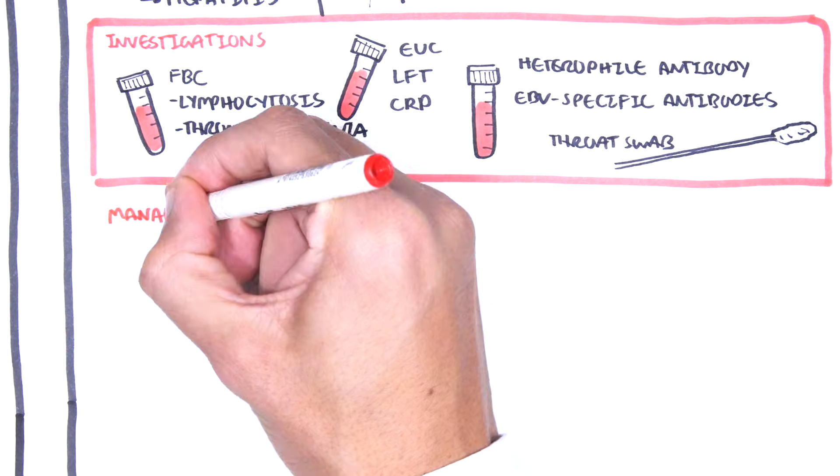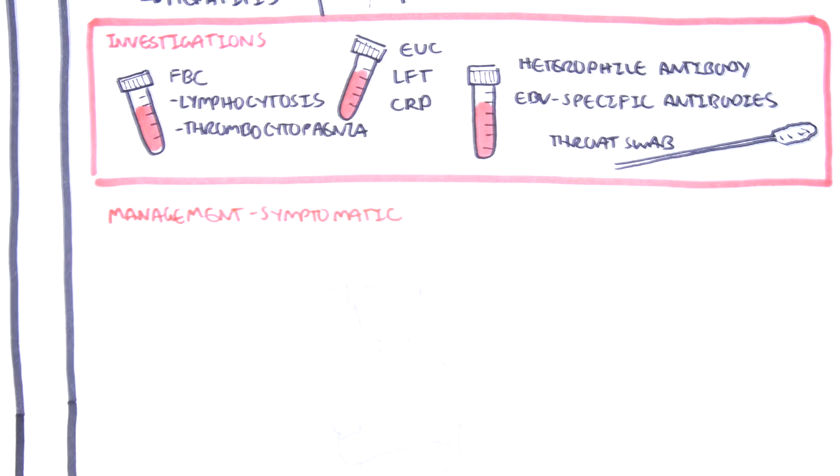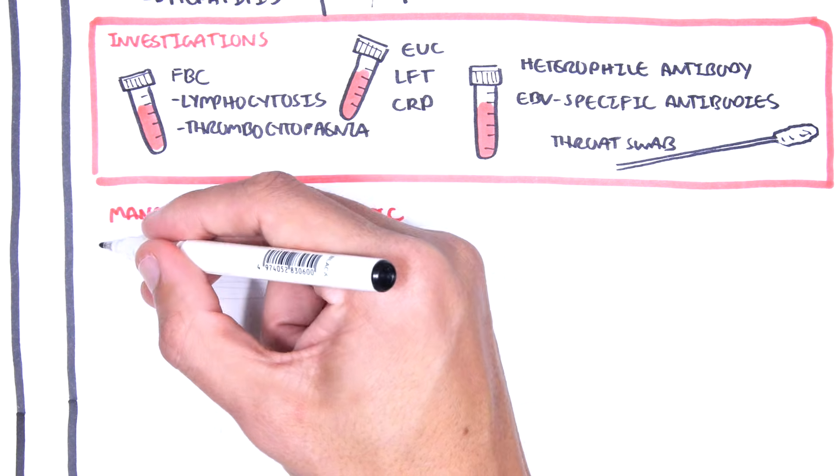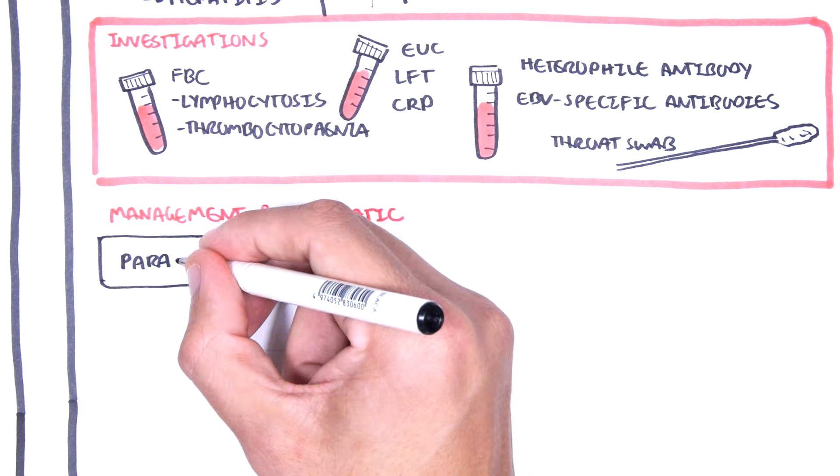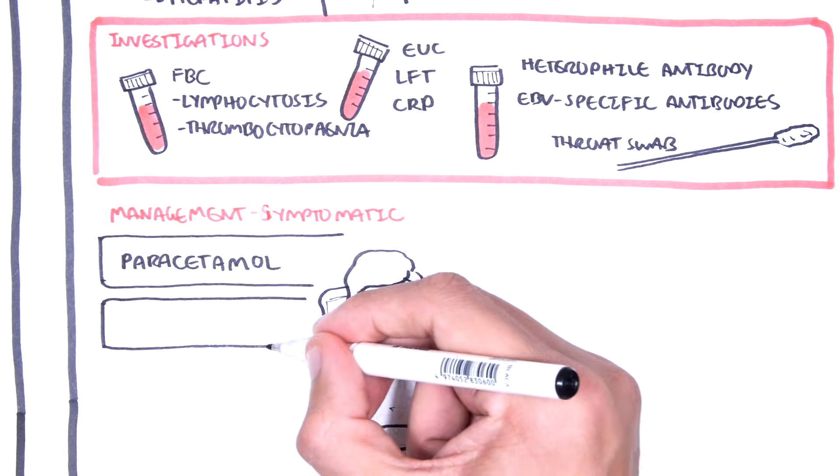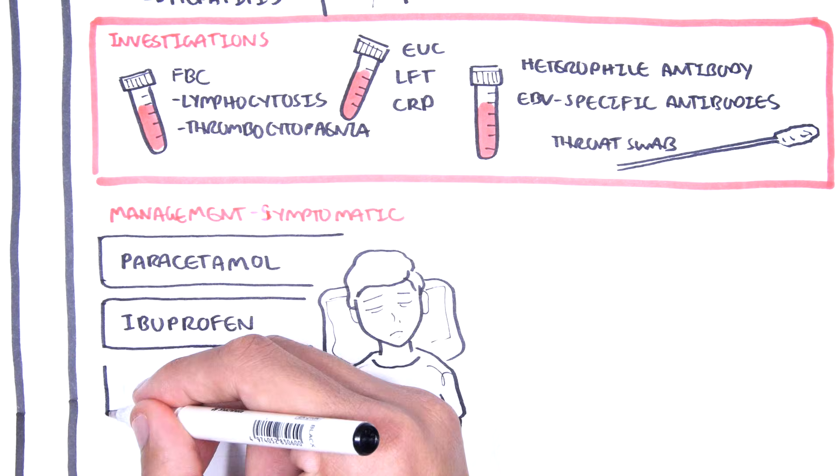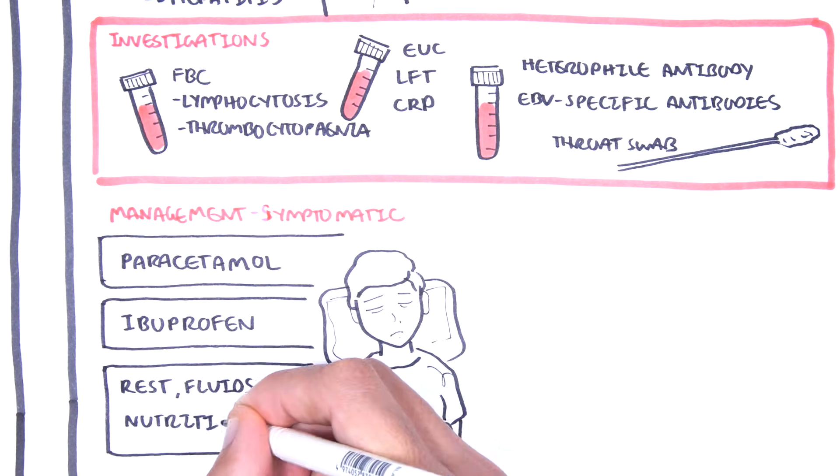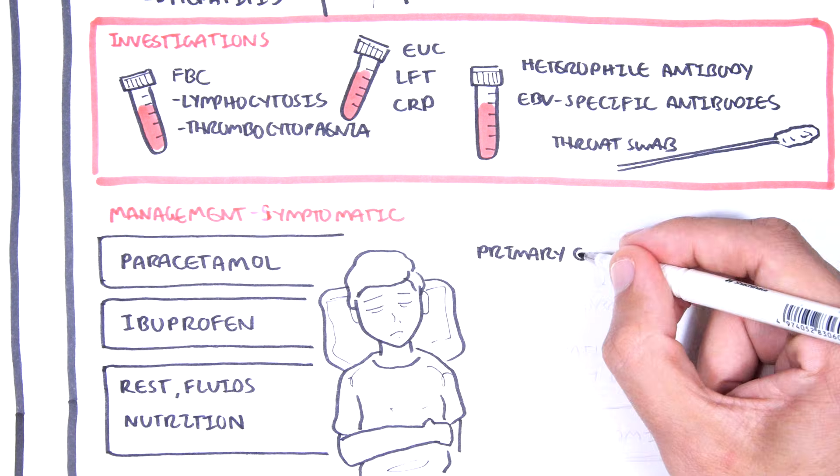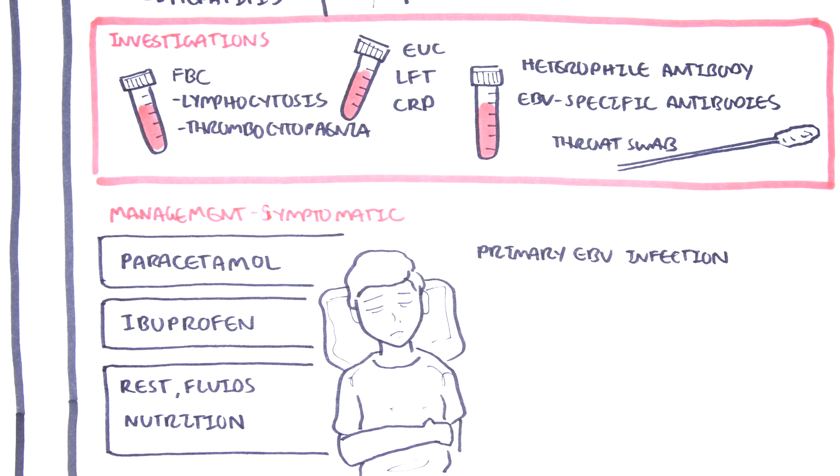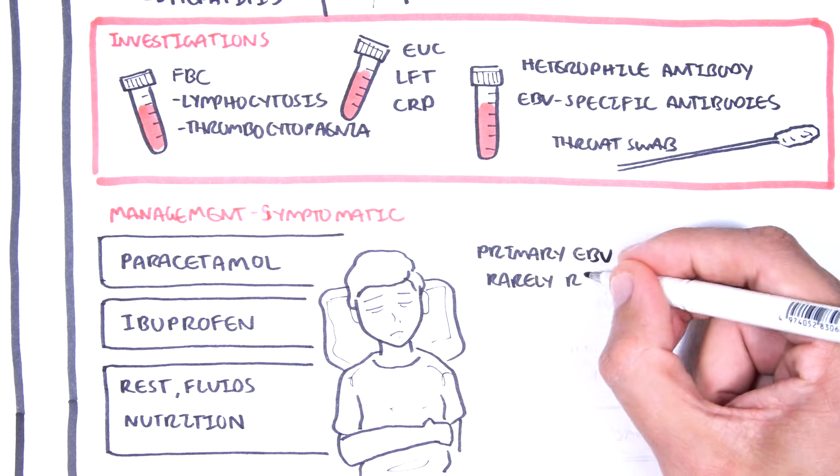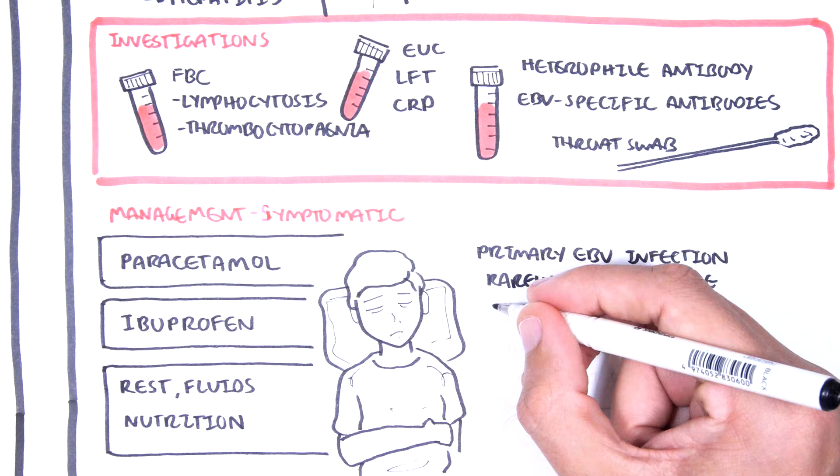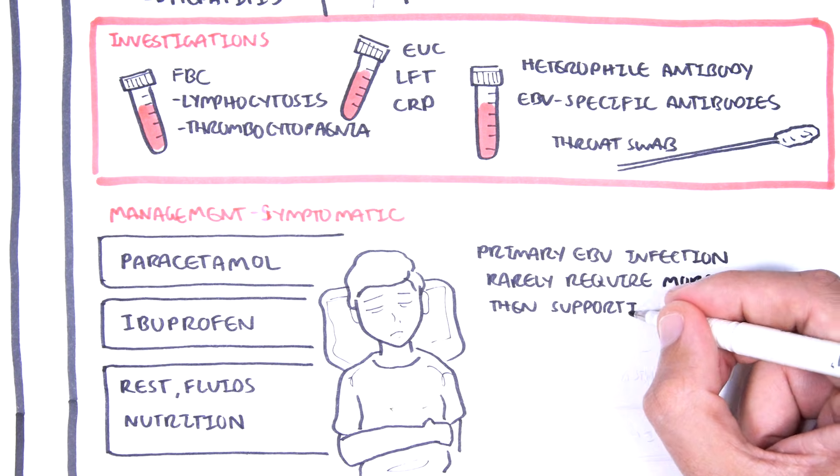Treatment for symptomatic Epstein-Barr virus infection, which is infectious mononucleosis, is usually conservative and includes pain and temperature relief using ibuprofen and paracetamol, adequate rest, fluids, and good nutrition. Primary Epstein-Barr virus infection rarely requires more than supportive treatment.